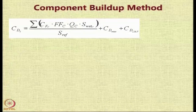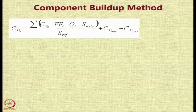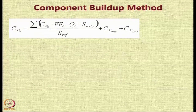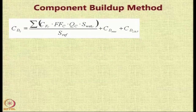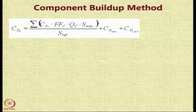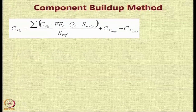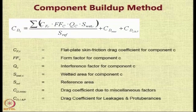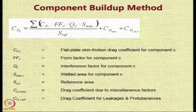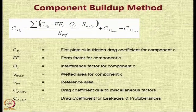The general formula for the component build-up method is as follows: CD0 is a summation of CF times FF times Q times S_wet for each aircraft component, divided by the wing reference area. To that, you add CD_miscellaneous and CD_LNP, where the various terms in the equation are as described.